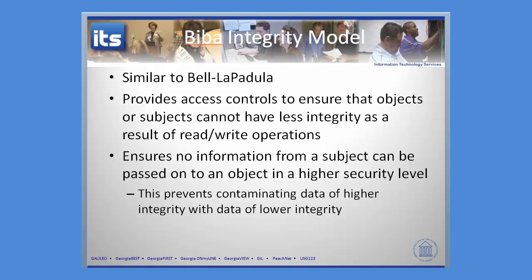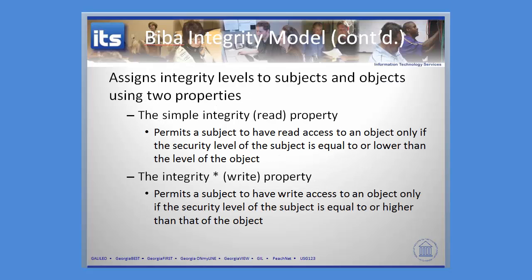What it is is similar to the Bell model, but what we're going to do is make sure that integrity is protected. And to do that, we want to make sure that there's no contamination within the system. We've got two principles associated with this. The first is this idea that we're going to read down — you can only read things with a data classification equal or lower to the level of the object — and we're only going to write up, so you can only write if the security level of the subject is equal or higher. So: read down, write up. Otherwise, very similar to the Bell model in terms of confidentiality, but this addressed integrity using integrity levels associated with a particular model.